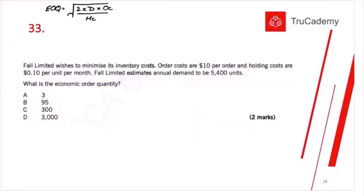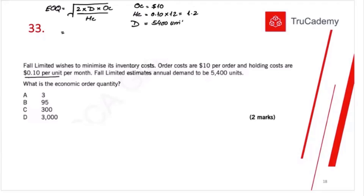Let's prove whether this is true. For example, a firm wishes to minimize its inventory costs. The ordering cost is $10 per order, and the holding cost is $0.10 per unit per month. Since demand is given on an annual basis, you need to match the holding period: $0.10 times 12 equals $1.20 per unit per year. So: ordering cost = $10/order, annual holding cost = $1.20/unit, annual demand = 5,400 units.